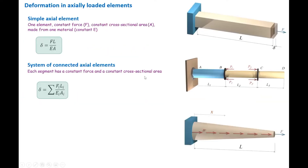But what if we have a section with variable cross-section area, or variable loading, or both — where section and loading are going to be different? I gave you the equation, but I didn't prove that. Here, I'm going to prove that equation to show how we can derive the right equation to calculate the deformation for this case.